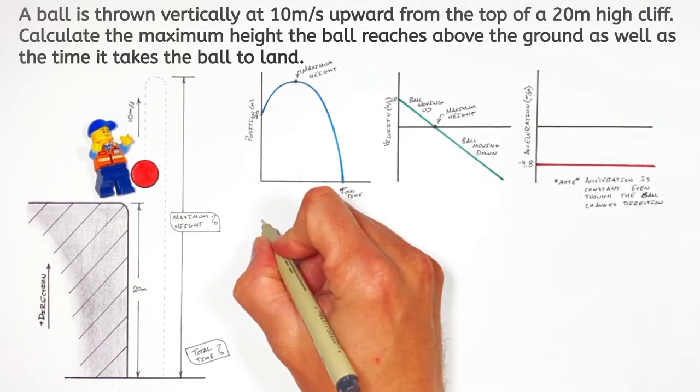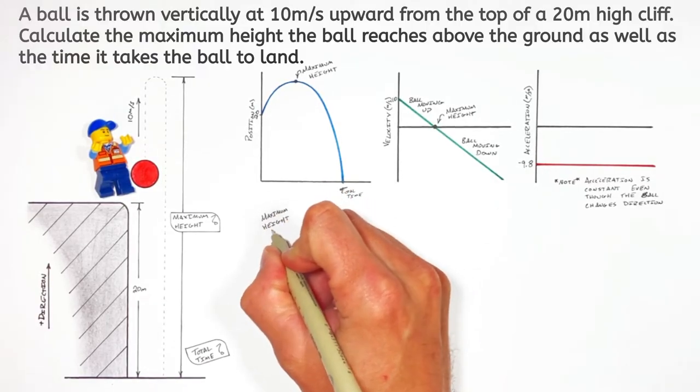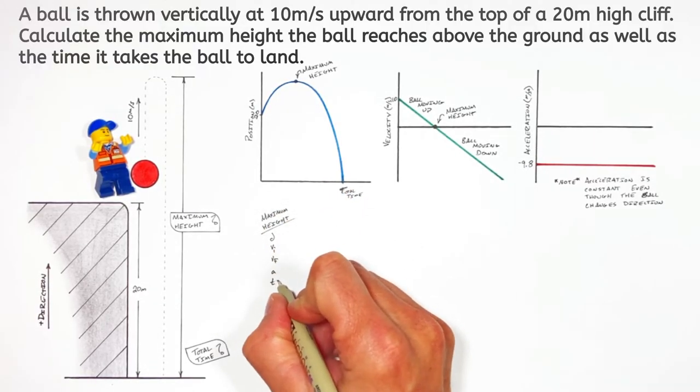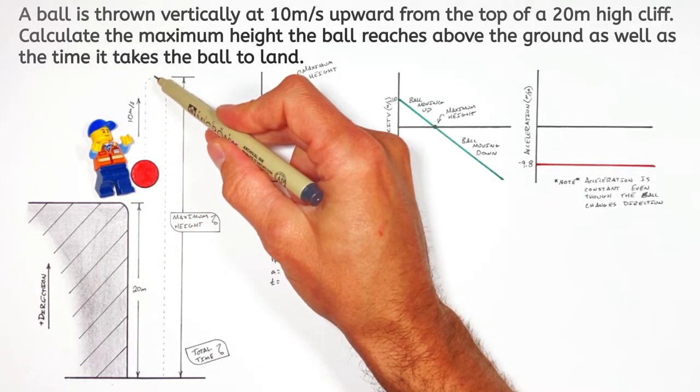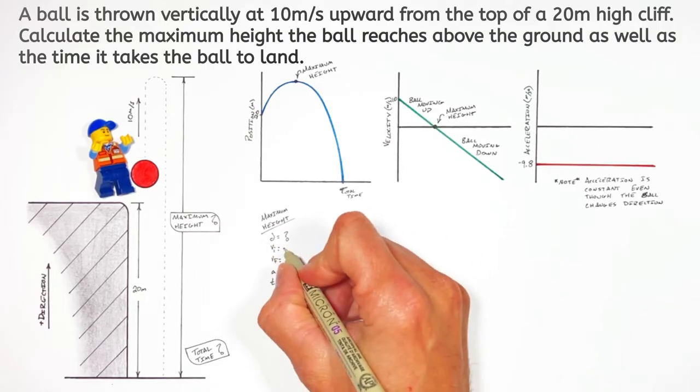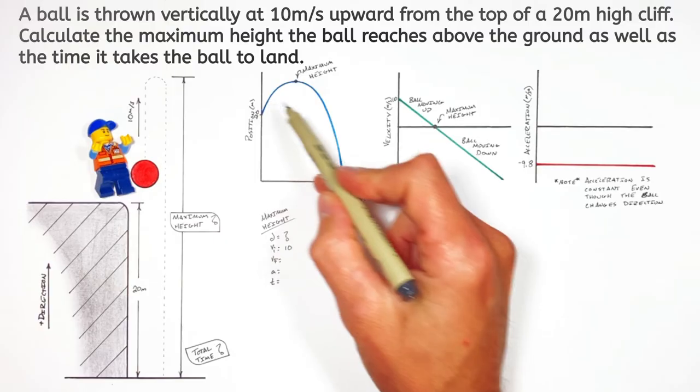So getting down to calculations, first let's solve for the maximum height the ball reaches above the ground. Laying out our five kinematic variables, we need to find the displacement of the ball as it moves upward. We know the initial velocity of the ball is 10 meters per second. And at its highest point, we can see the velocity of the ball is going to be zero.